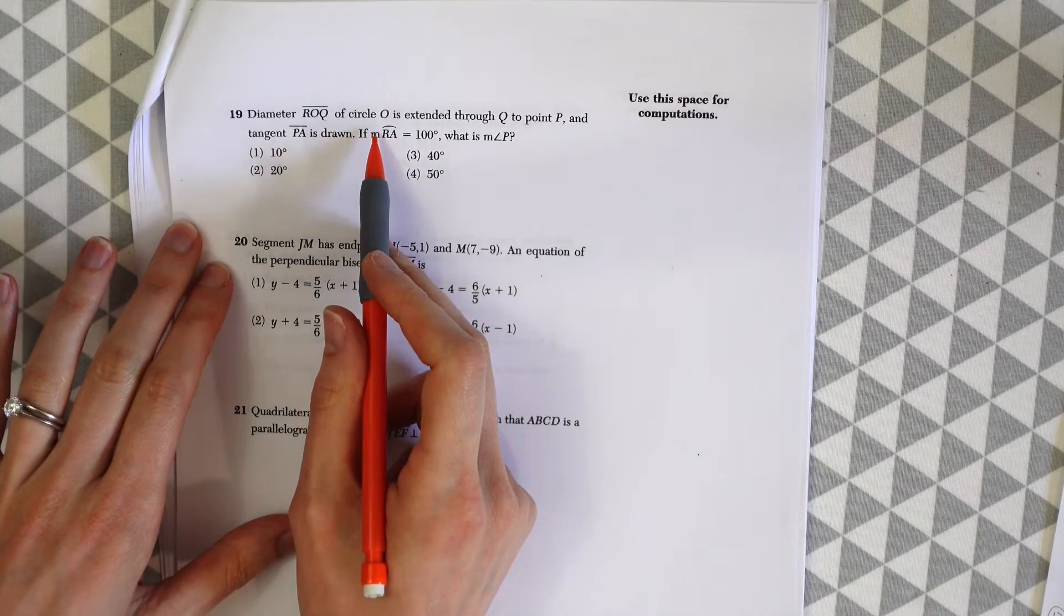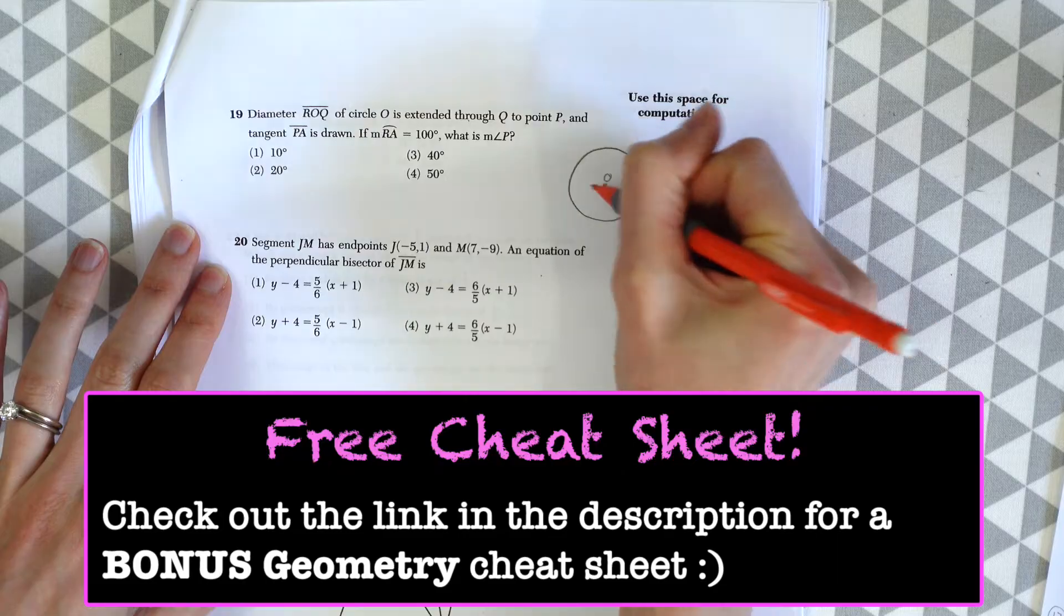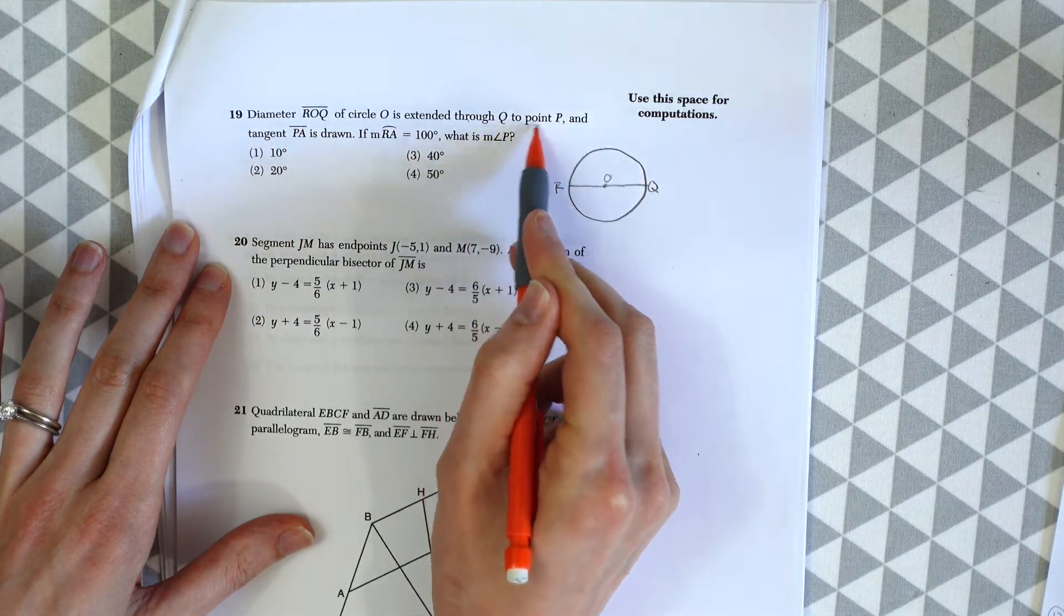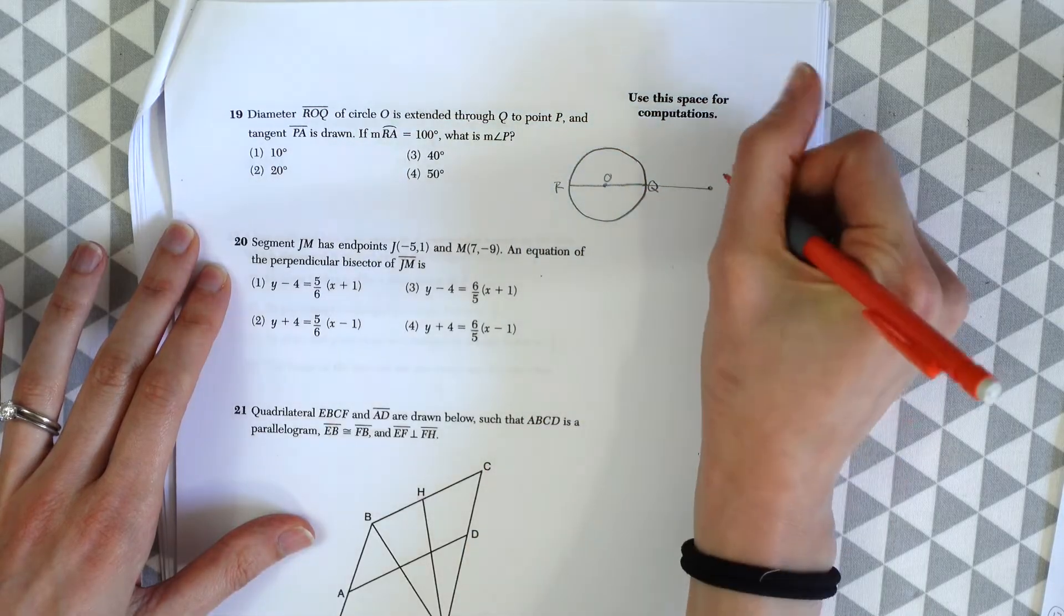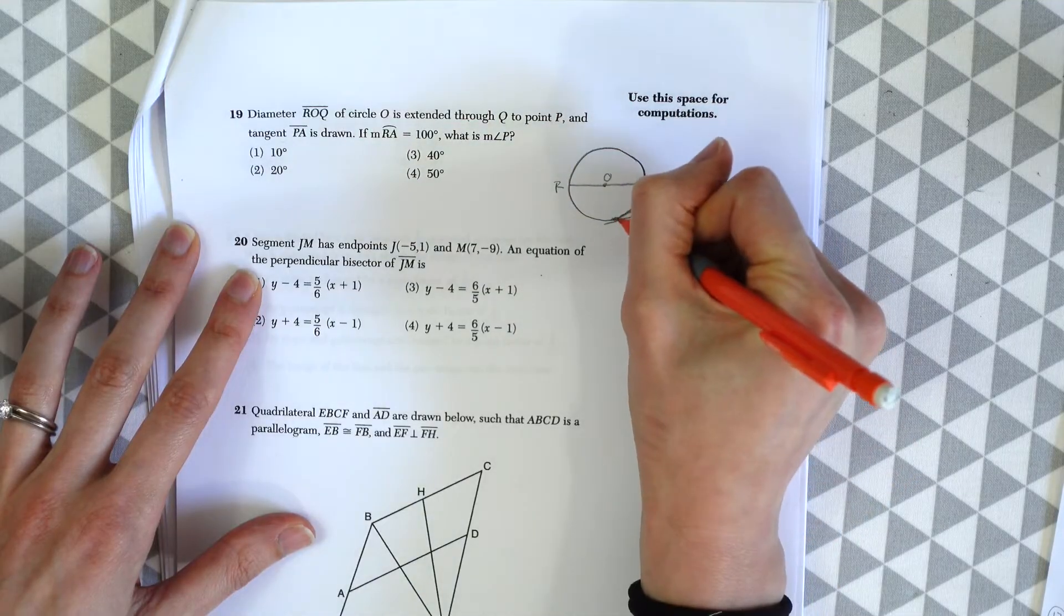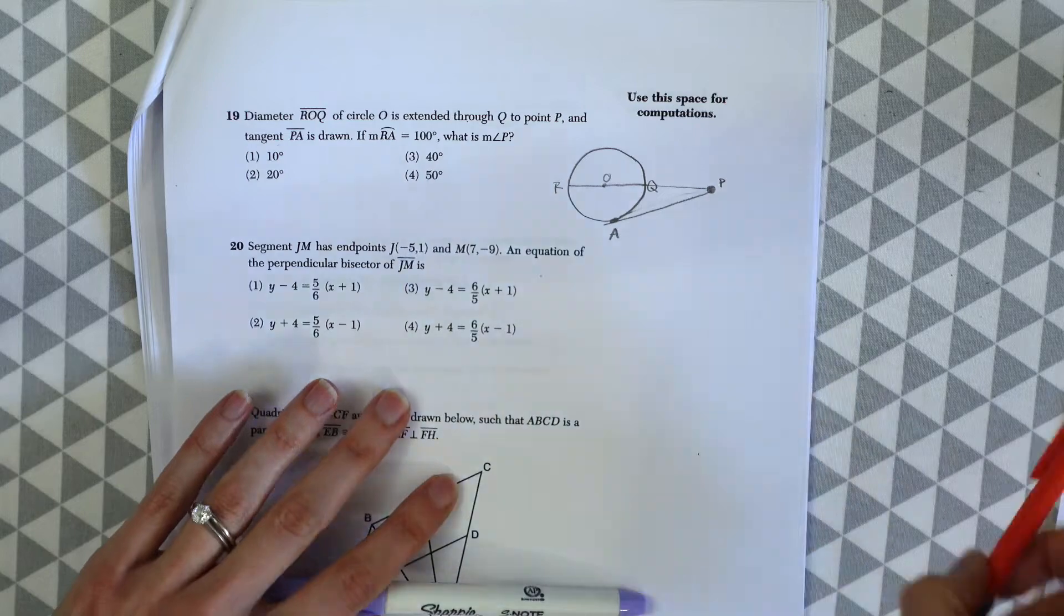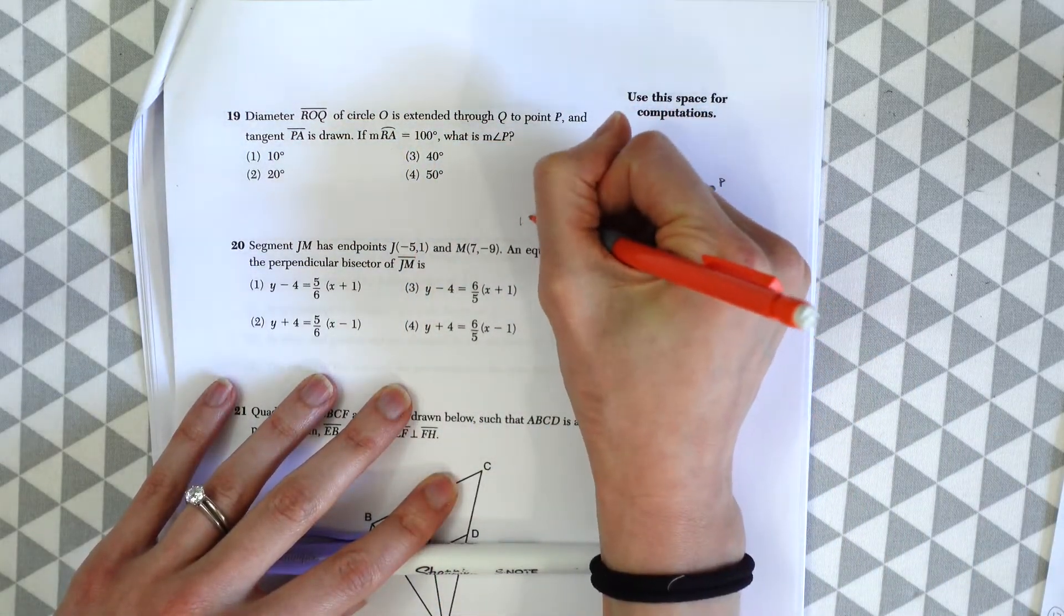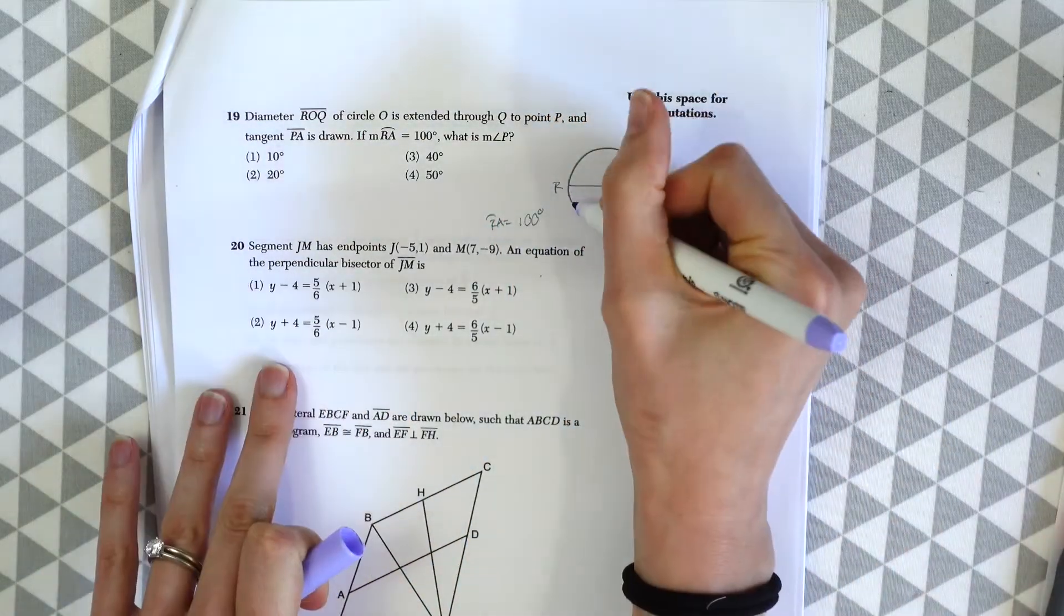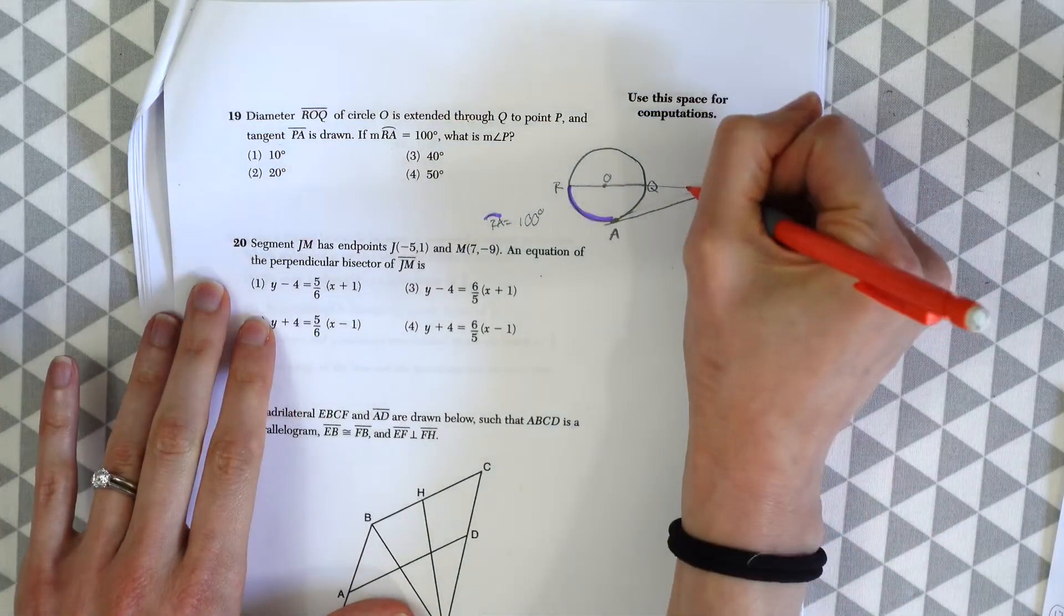Here's question 19. Diameter ROQ of circle O extends through Q to point P, and tangent PA is drawn. If arc RA is equal to 100 degrees, what is angle P?